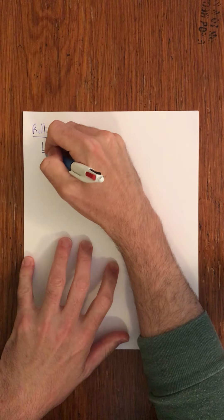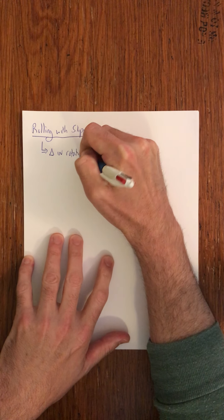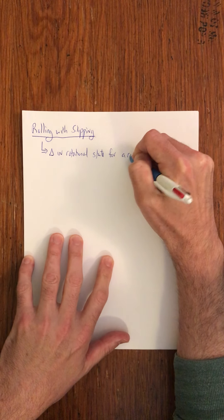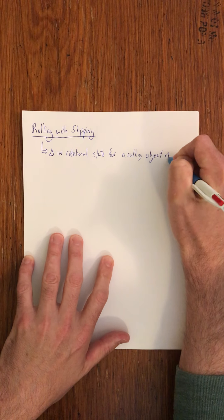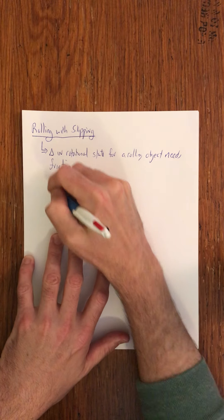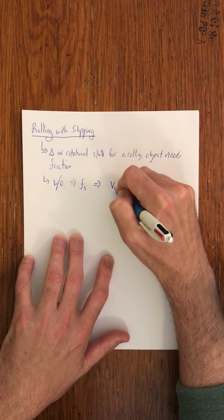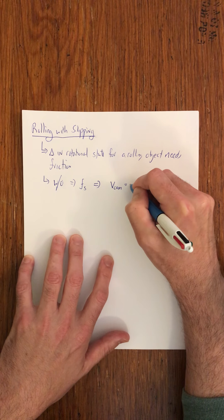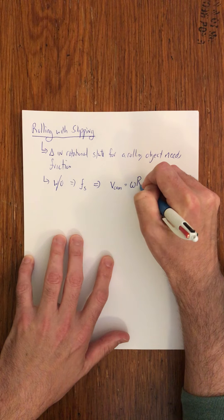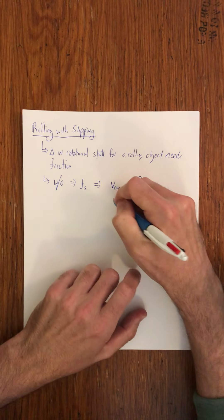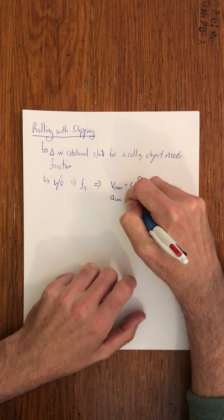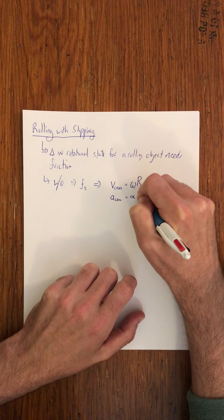For an object to change its rotational state, friction has to be involved. Usually that friction is static friction. A change in rotational state for a rolling object needs friction. If it's rolling without slipping, that friction is static friction, and there's a necessary link between the velocity of the center of mass, the rate of rotation, the outermost radius, the center of mass acceleration, and the rate at which the rotational rate is changing. Those are the conditions of pure rolling.